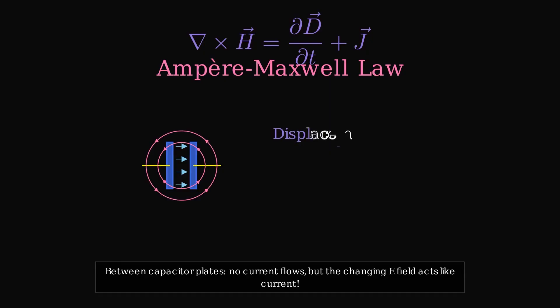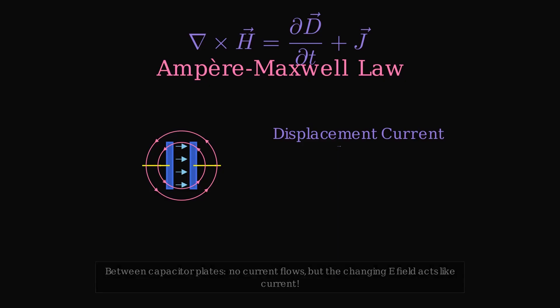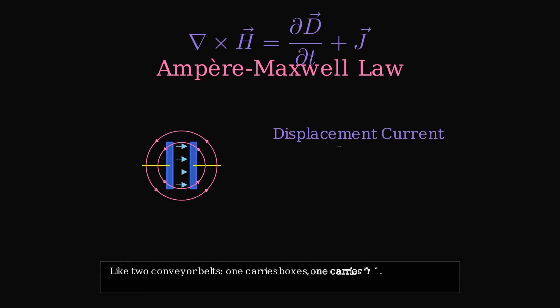Maxwell called this displacement current. It completes the circuit even where no charges actually flow. Think of two conveyor belts. One carries actual boxes. The other carries information about boxes. Both create the same magnetic effect around them.